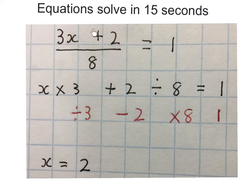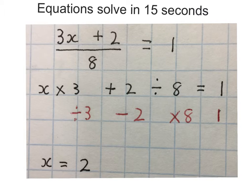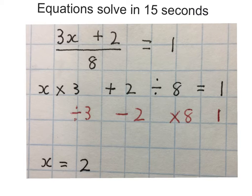Again, to solve for x in an equation like this, you move this stuff away from x, furthest guy first. Because there's a divide, I times by 8, then I minus 2, and then I divide by 3.